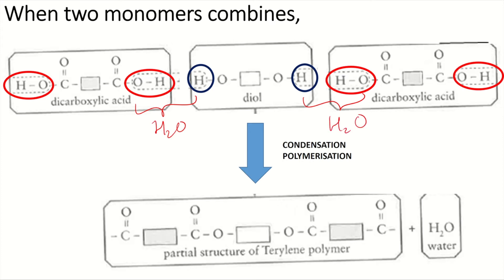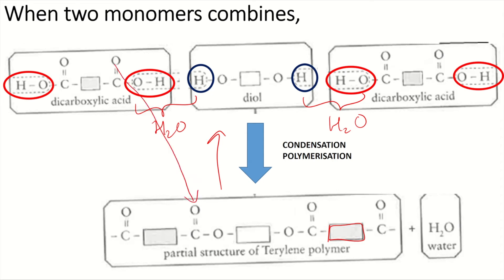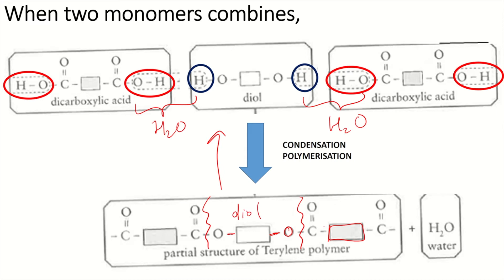In the terylene polymer structure there is a white rectangle and a shaded rectangle representing the two alternating monomer units. To work backwards and deduce the monomers, we separate the two oxygens at the ester linkage. One oxygen comes from the carboxyl group and another comes from the hydroxyl group, so we cut the covalent bond between them.